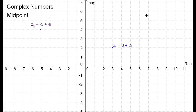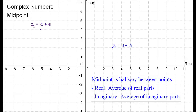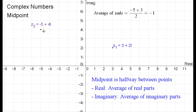Finding the midpoint between two complex numbers works similarly to the rectangular system. The midpoint is halfway between two points, and this works in the complex plane as well. Instead of taking the average of the x coordinates and the y coordinates, we take the average of the real parts and the average of the imaginary parts. For our example, the average of the real coordinate parts would be negative 5 plus 3, which is negative 2 over 2 — because it is an average of two numbers — which equals negative 1. So the real part of the complex number halfway between them is negative 1.